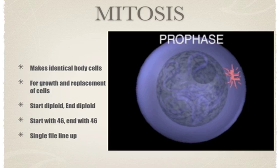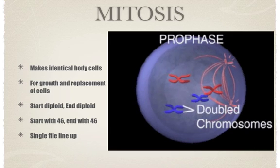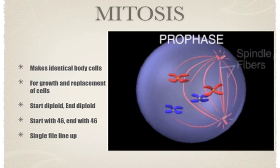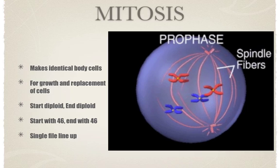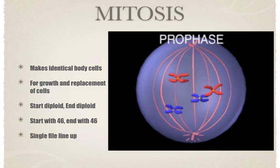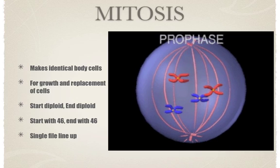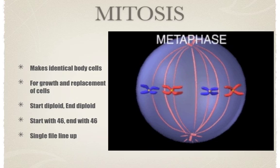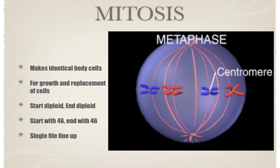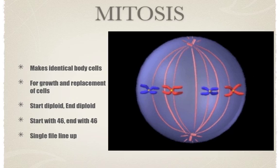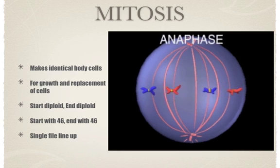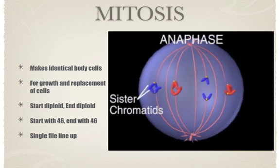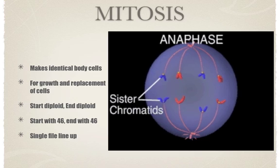In prophase, the chromatin coils to form visible chromosomes, the nuclear envelope and nucleolus disappear, and a spindle forms between the pairs of centrioles which have moved to opposite ends of the cell. In metaphase, the chromosomes move to the equator of the spindle with each chromatid attached to a separate spindle fiber by its centromere. During anaphase, the centromeres split and the sister chromatids are pulled apart to opposite poles of the cell.